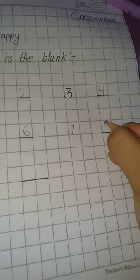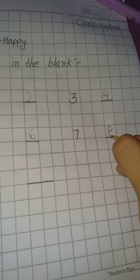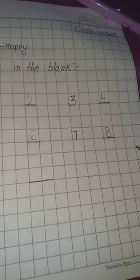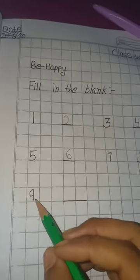2 circle, one small circle, one big circle. Okay. This is 8. 8 ke baad 9.